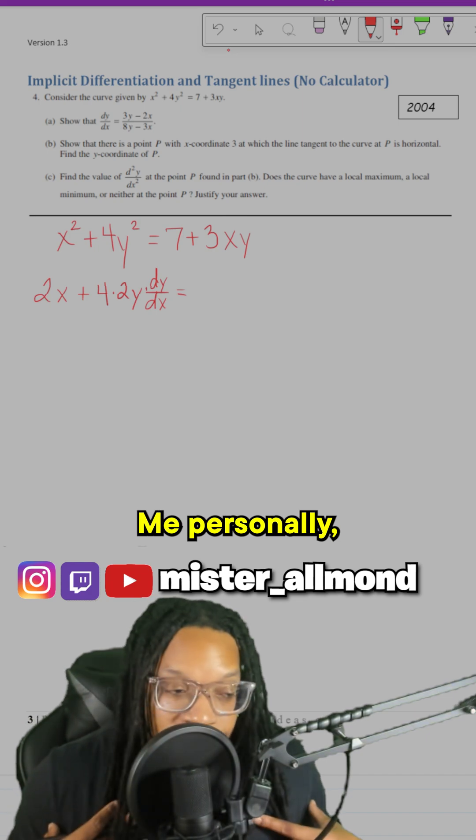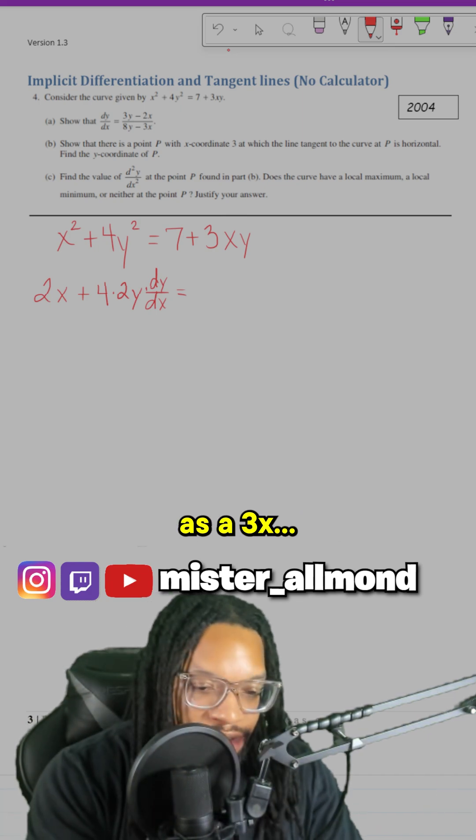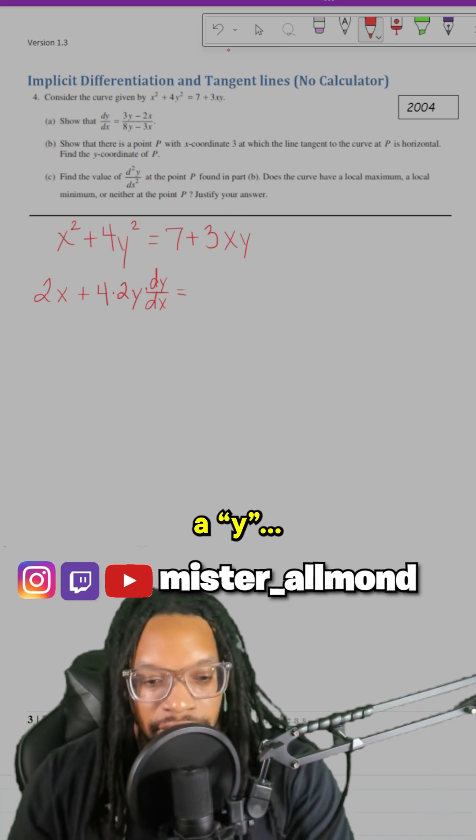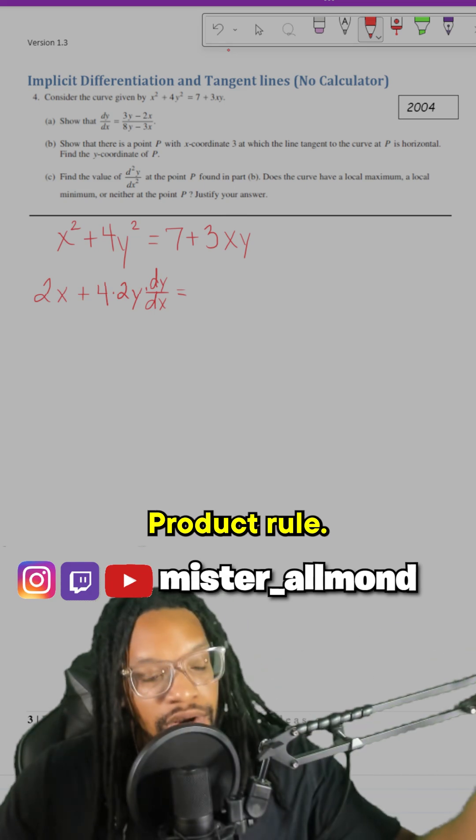For the 3xy term, I like to think of it as 3x multiplied by y. Two functions being multiplied—product rule.